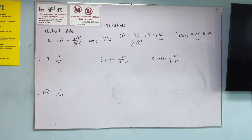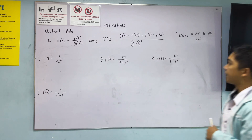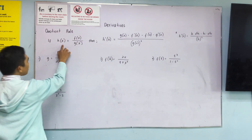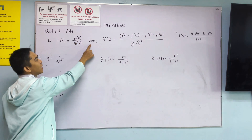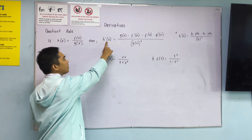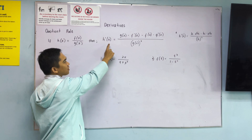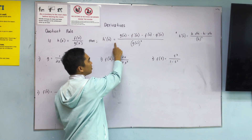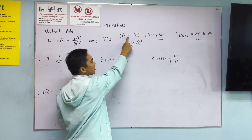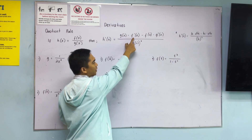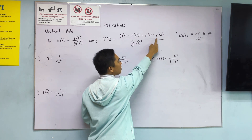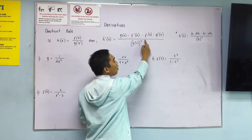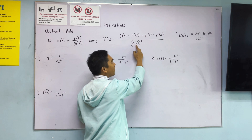Now let's have the quotient rule for derivatives. If h of x is equal to f of x all over g of x, then the derivative of h of x is equal to g of x times the derivative of f of x minus f of x times the derivative of g of x, all over g of x squared.